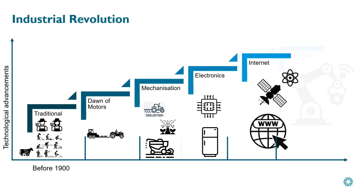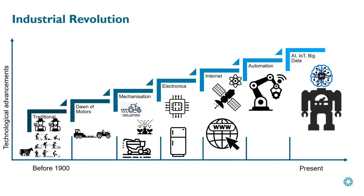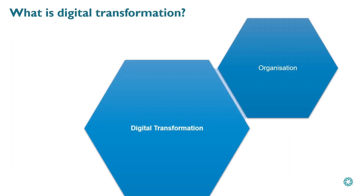That's the rise of the internet and the discovery of nuclear energy. And finally, we are currently seeing the fourth industrial revolution, often known as Industry 4.0, in which humans are attempting to further automation through artificial intelligence.